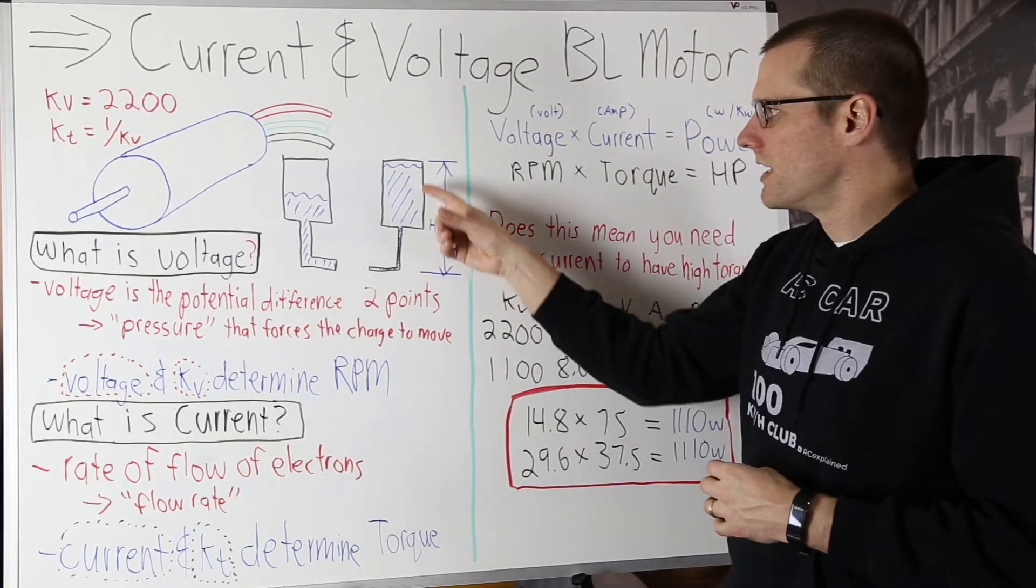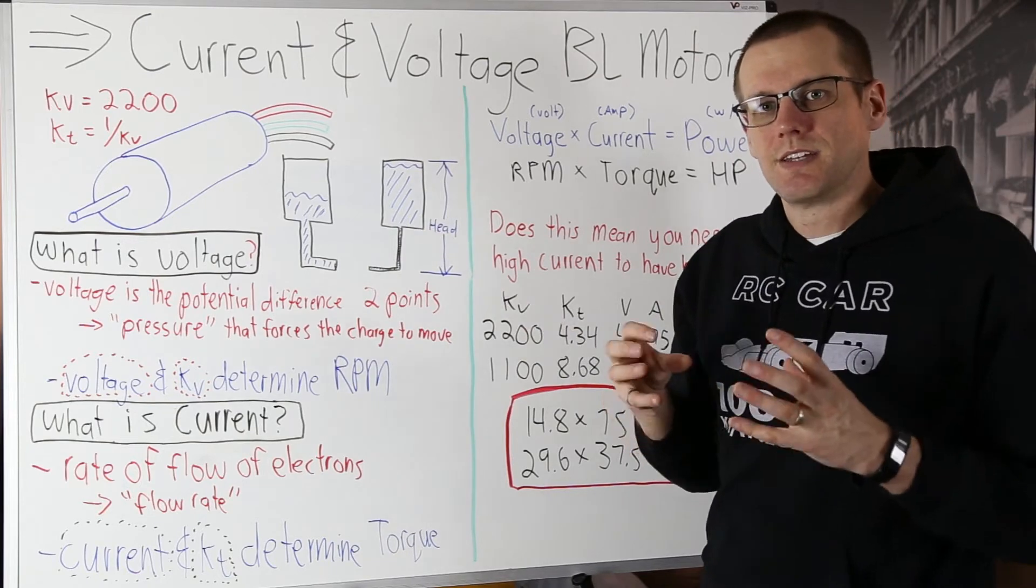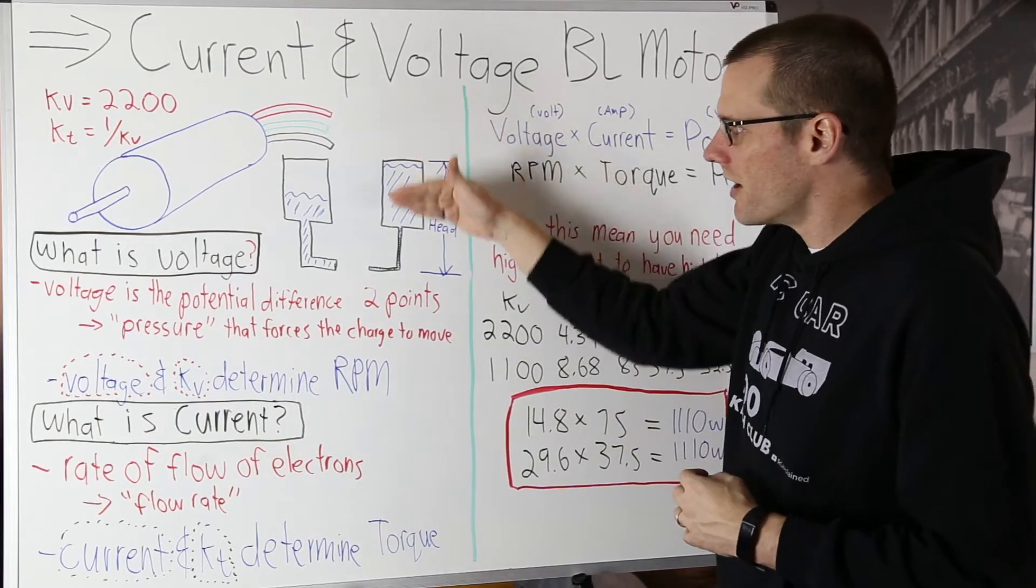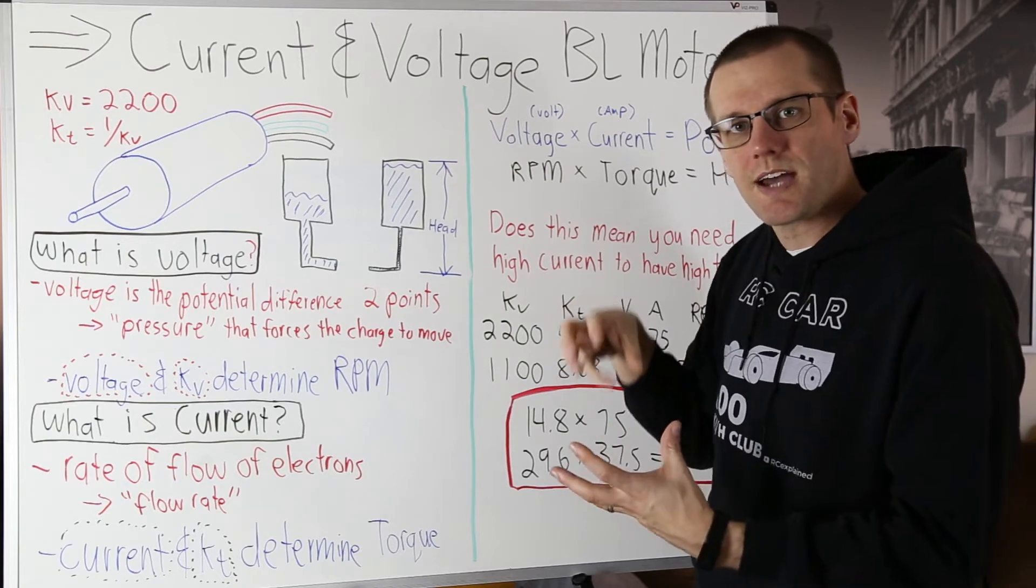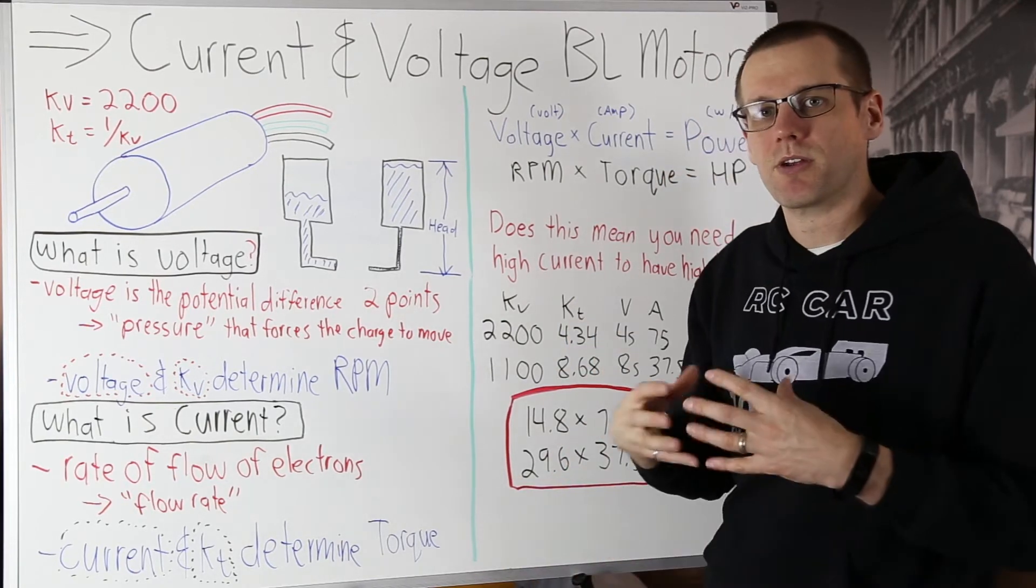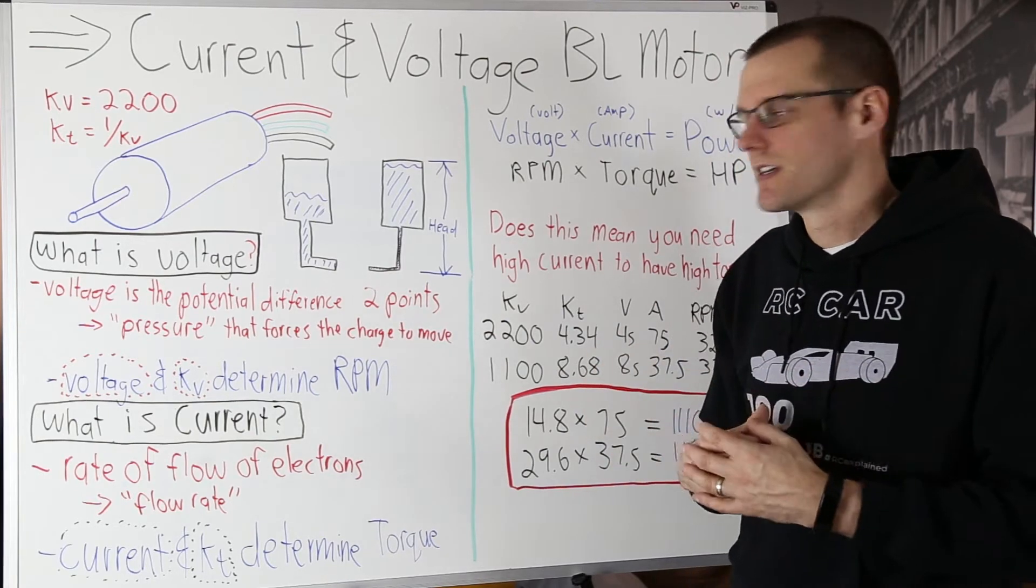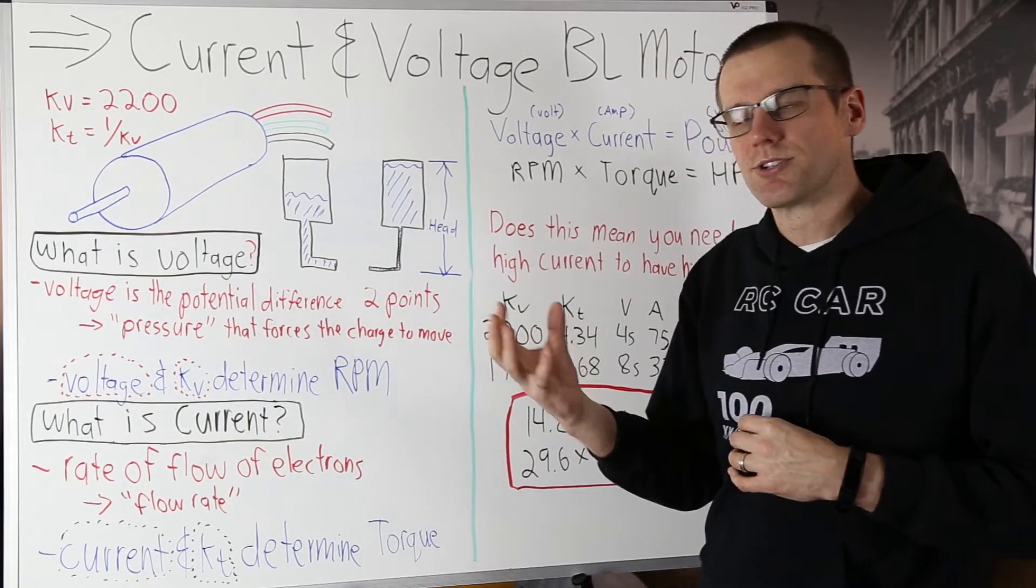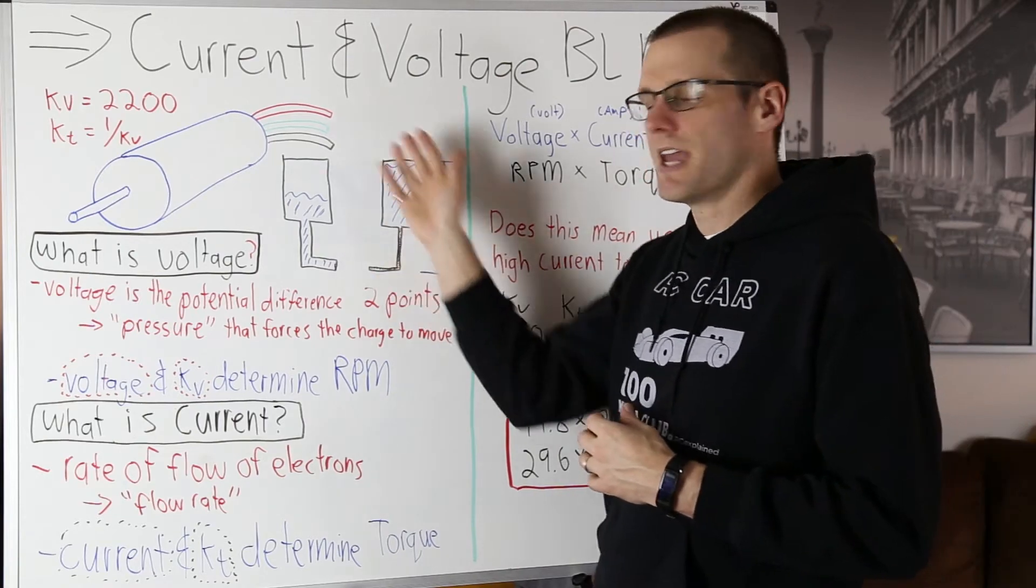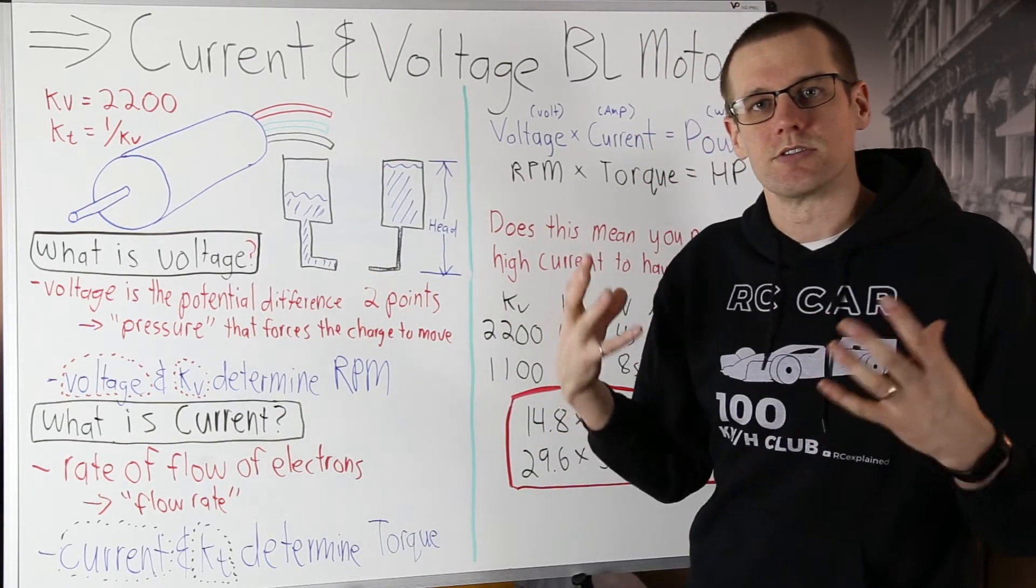Now if you imagine trying to get water through that skinny tank on the right hand side it's going to take a lot of pressure in order to force that water through that skinny pipe in order to get the same amount of water output on both sides. From that analogy you're able to see exactly how voltage and current influence our tank as well as our electrical circuits.